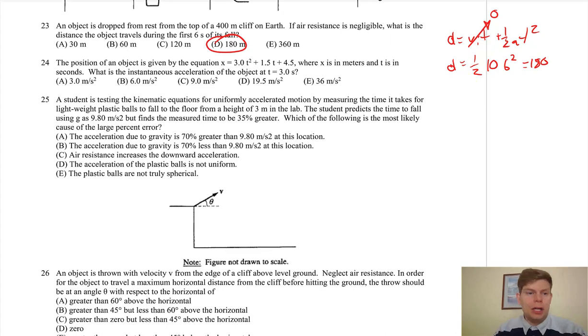Alright, the position of an object given by the equation—by the way, anytime you got a polynomial like this, pretty good chance you're doing calc. We got a position equation and we want acceleration. Acceleration is not the rate of change of position; it's the rate of change of velocity, which is itself the rate of change of position, so we need to take two derivatives.